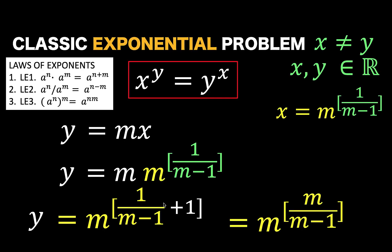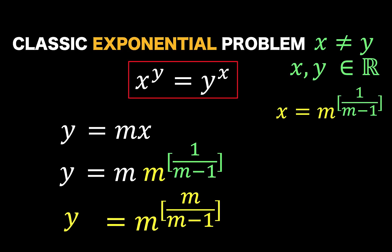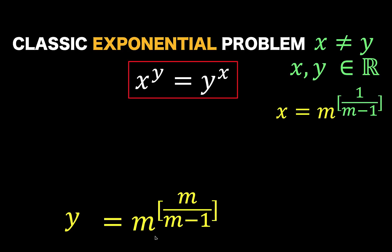we arrive at m raised to m over m minus 1, where m over m minus 1 is the simplified form of 1 over m minus 1 plus 1. And we now have our explicit formula for y.